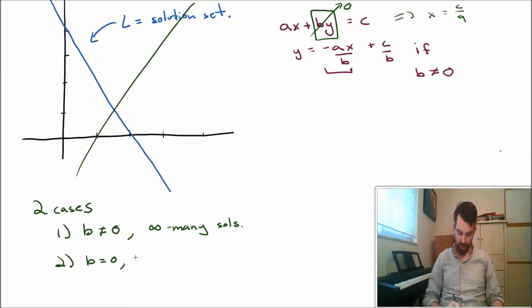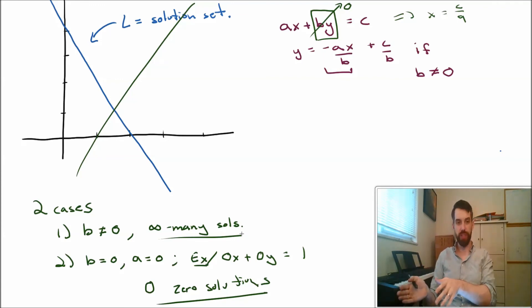So in my case two, I'm also going to assume that my a is equal to 0. In other words, I'm in an example like 0x plus 0y is equal to something non-zero on the right-hand side, like 1. And in this scenario, there are 0 solutions. So in other words, I have these two different possibilities. I have infinitely many solutions that's going to happen when I get an equation of a line. I have 0 solutions where this doesn't make any sense, it's 0 on one side and something non-zero on the other. And those are the only two different cases that I can think of for just a single equation in two dimensions.